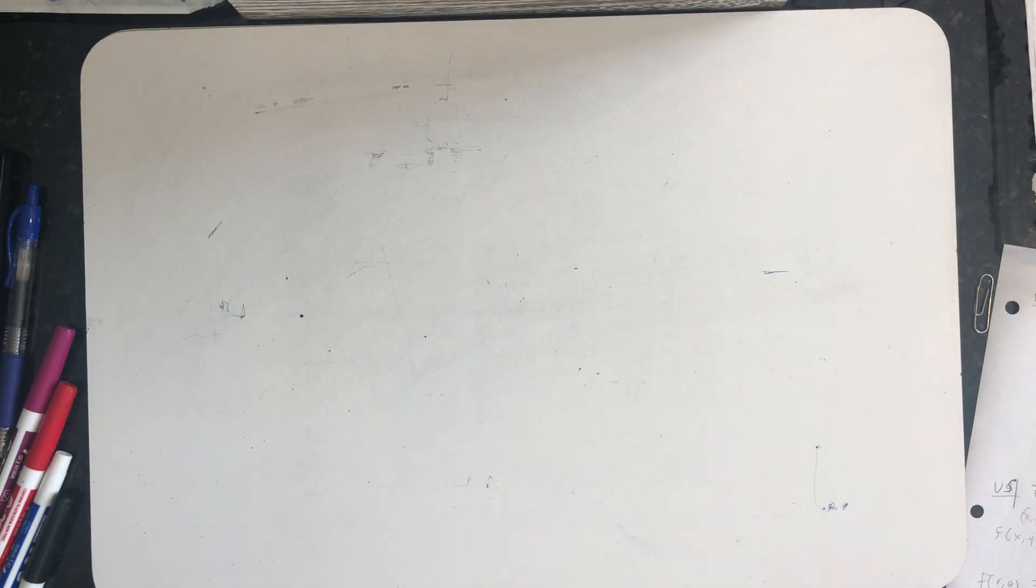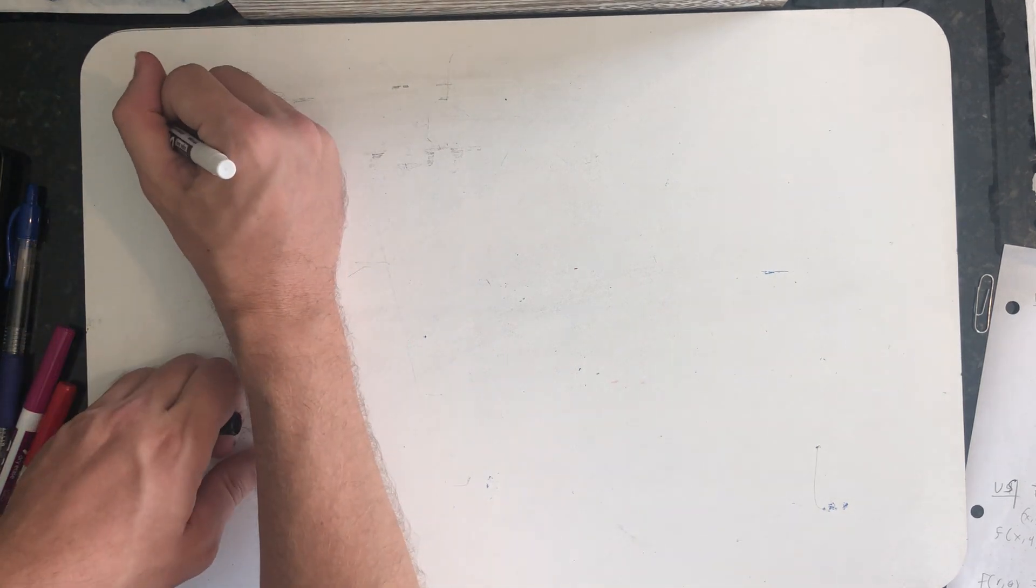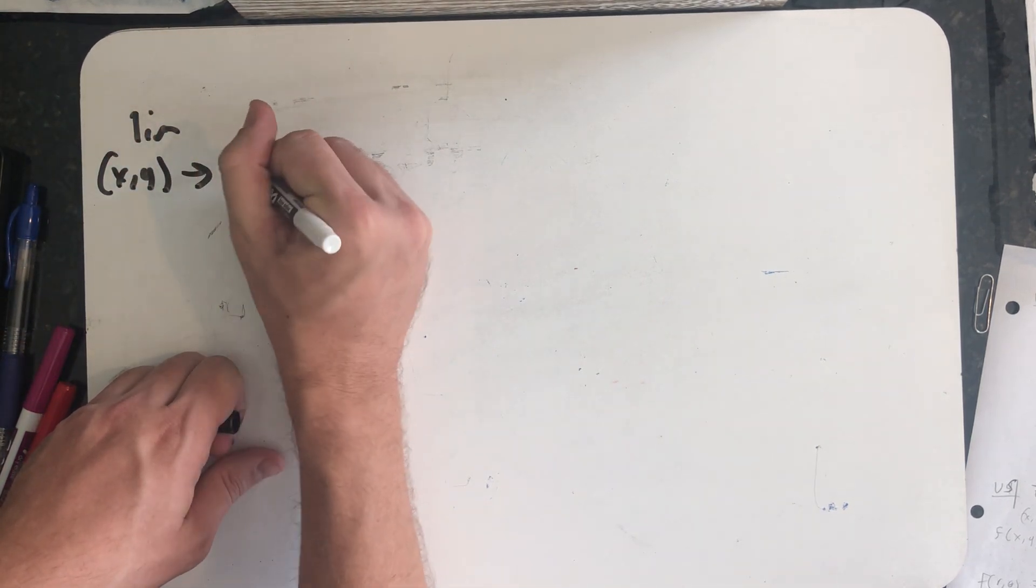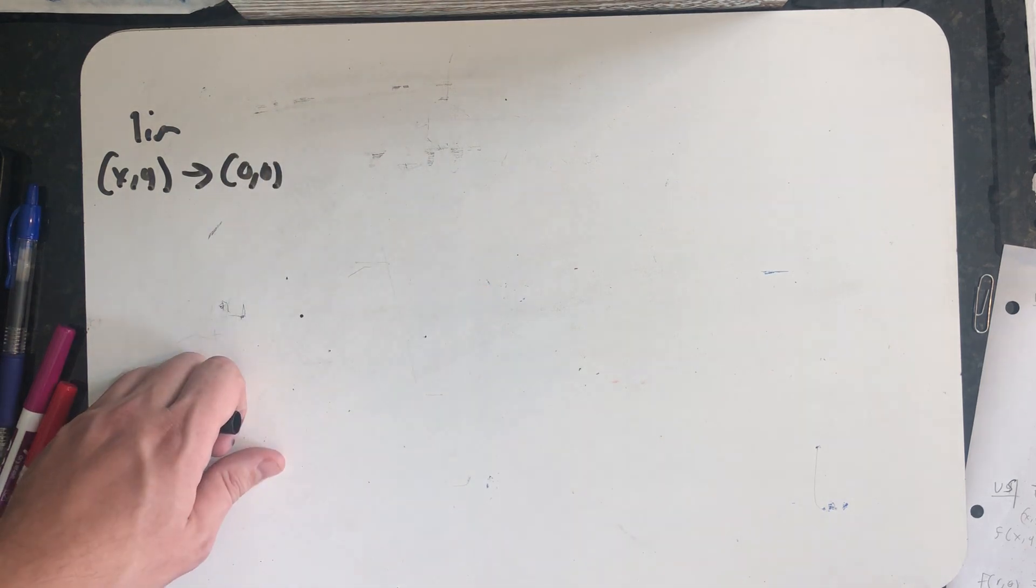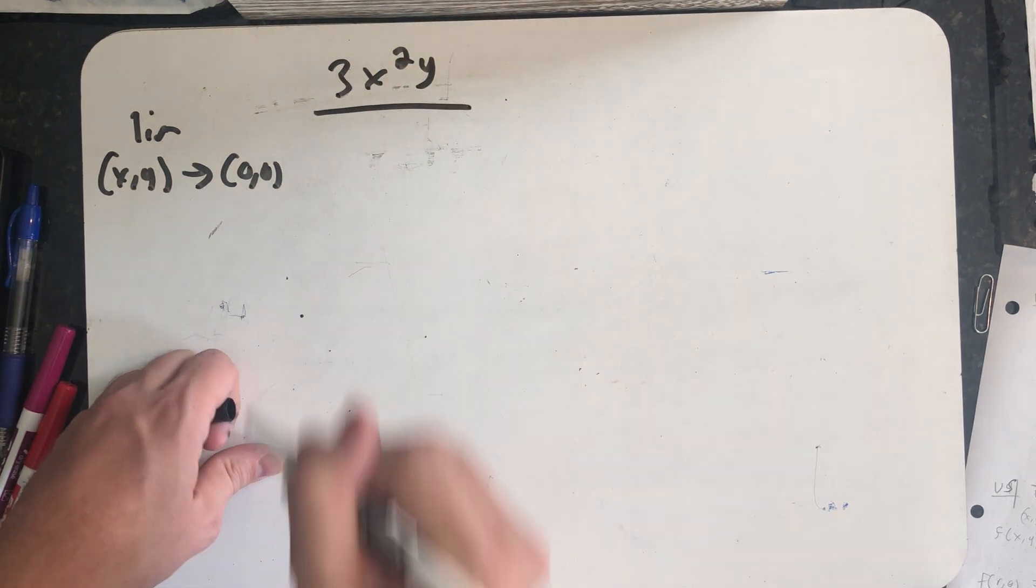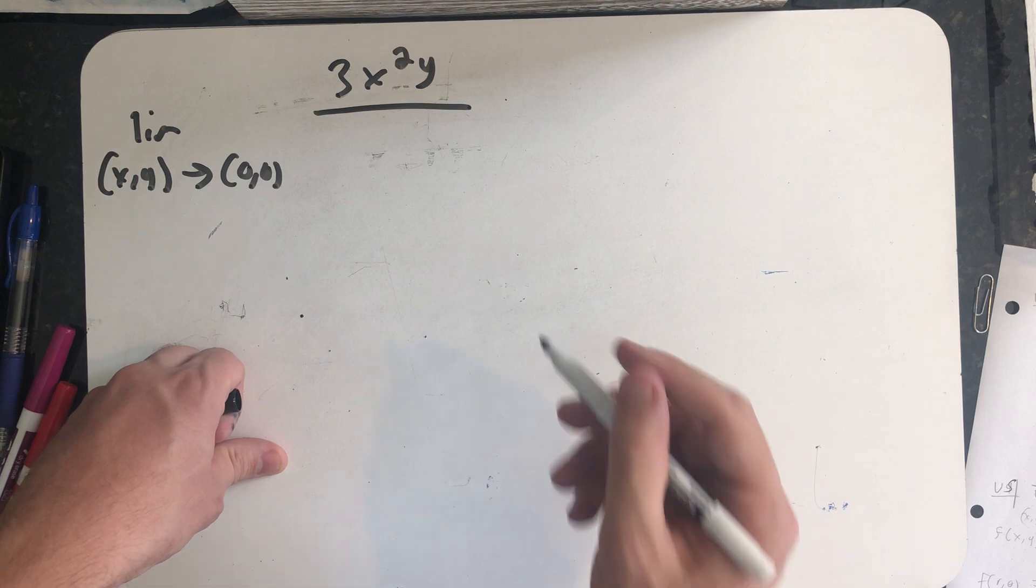Let's find the limit as (x, y) approaches the origin of 3x²y over x² + y².